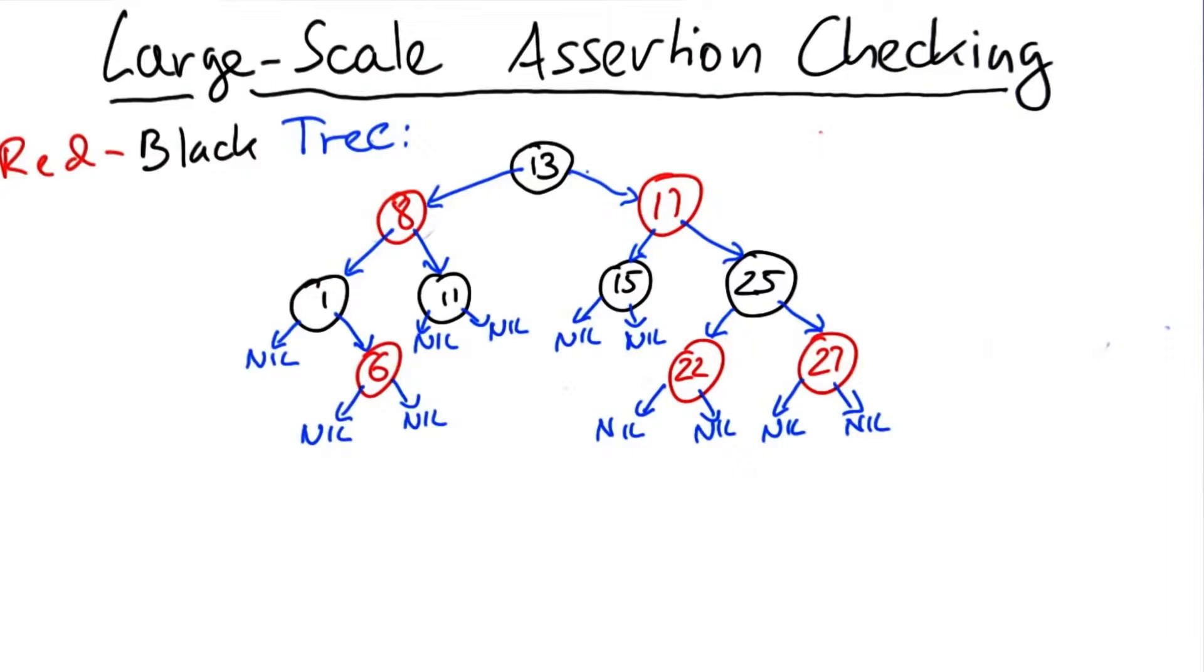The reason they're difficult to debug is they have a number of properties that must be maintained at all times. To start with, there always must be trees. You can't have any cycle in here.